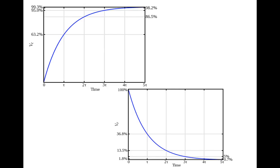One more thing before we finish: these are curves often used for RC circuits. This first graph shows the voltage of the capacitor over time — as time increases, the voltage on the capacitor goes from zero up to 100% of the battery voltage. The second graph shows the voltage of the resistor over time — it starts at its greatest value, in our case nine volts, and then decreases down to zero volts. These are shown in percentages, illustrating how voltage shifts from the resistor to the capacitor as the circuit charges.